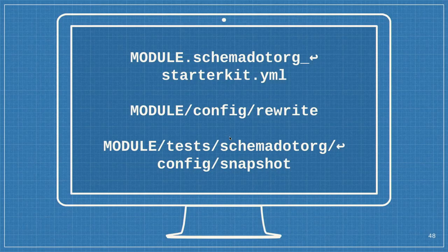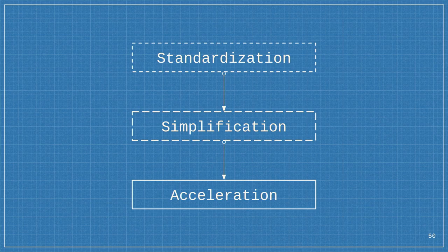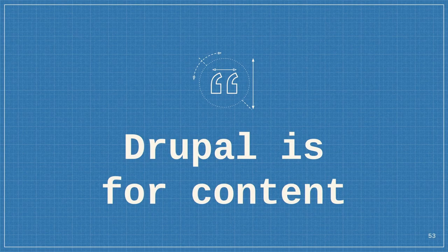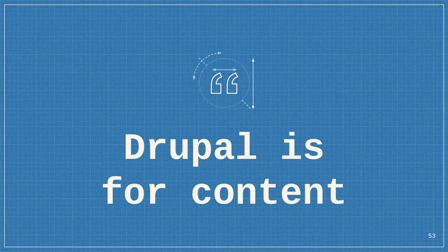Wrapping up — the benefits: standardization is the core. It simplifies things because we know what we're doing. As soon as we start a site, we have a concept, and everything accelerates — easier, simpler, and faster. The conclusion: Drupal is for content. That's what we need to think about more. When I look at all the modules and what's happening here, it's all about having an amazing tool for great content authoring. That's what distinguishes Drupal, and that's what will matter in the CMS market.